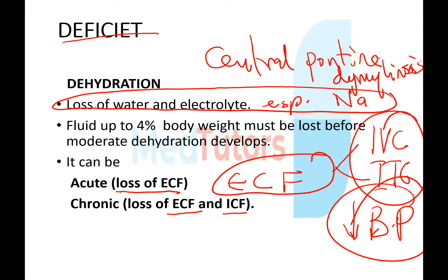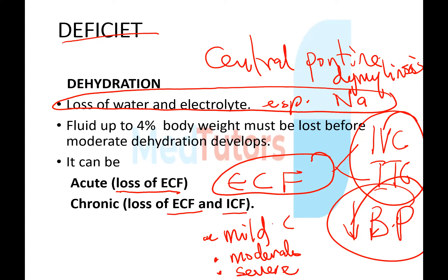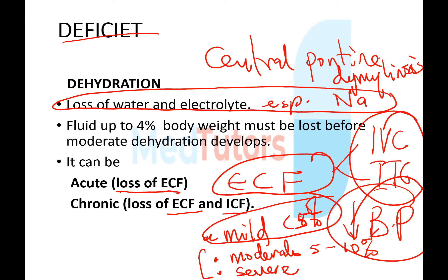Dehydration is also classified as mild, moderate, and severe. Mild dehydration is loss of less than 5% of body weight and can be corrected orally. Moderate dehydration is loss of 5–10% of body weight, and severe dehydration is loss of greater than 10% — both requiring parenteral correction.